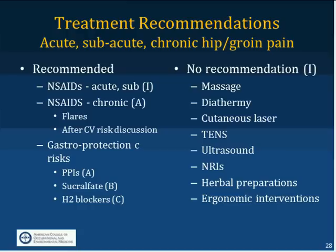Regarding treatment, NSAIDs are recommended acutely and subacutely, though the evidence is largely extrapolation. When pain becomes chronic, there is A-level evidence, but NSAIDs are generally reserved for flares of pain and after a discussion about cardiovascular risk. Gastroprotection is used with various degrees of aggressiveness — orthopedists tend to use it more routinely than internists or occupational medicine physicians, but evidence shows the risk is reduced. Gastric risk questionnaires are available, or you can look at the history for bleeding ulcers, coagulopathies, or other risk factors.